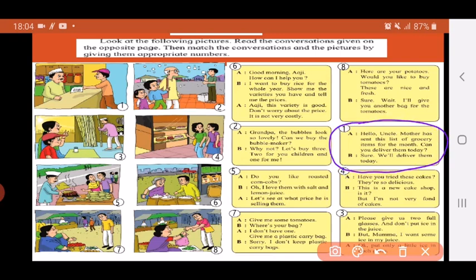Let's read this conversation. The man says, Hello uncle, mother has sent this list of grocery items for the month. Can you deliver them today? And the man replies, Sure, we'll deliver them today. So this conversation matches the picture where this man is telling uncle, that is the shopkeeper, that his mother has sent a list of all the grocery items.